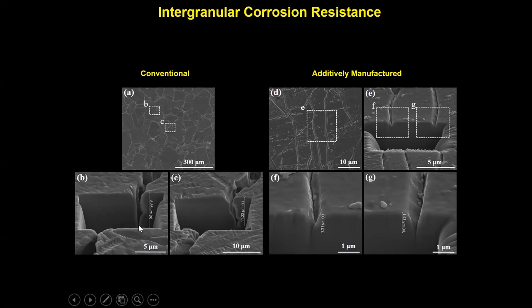We provided cross-sectional images from the grain boundaries as the corrosion case. For the conventional material, the depth of corrosion along the grain boundaries is almost 10–11 micrometres, but for the additively manufactured material, the depth of corrosion is almost 1.3–1.4 micrometres, which is much less than the conventional material, again confirming the high resistance of additively manufactured material to intergranular corrosion.